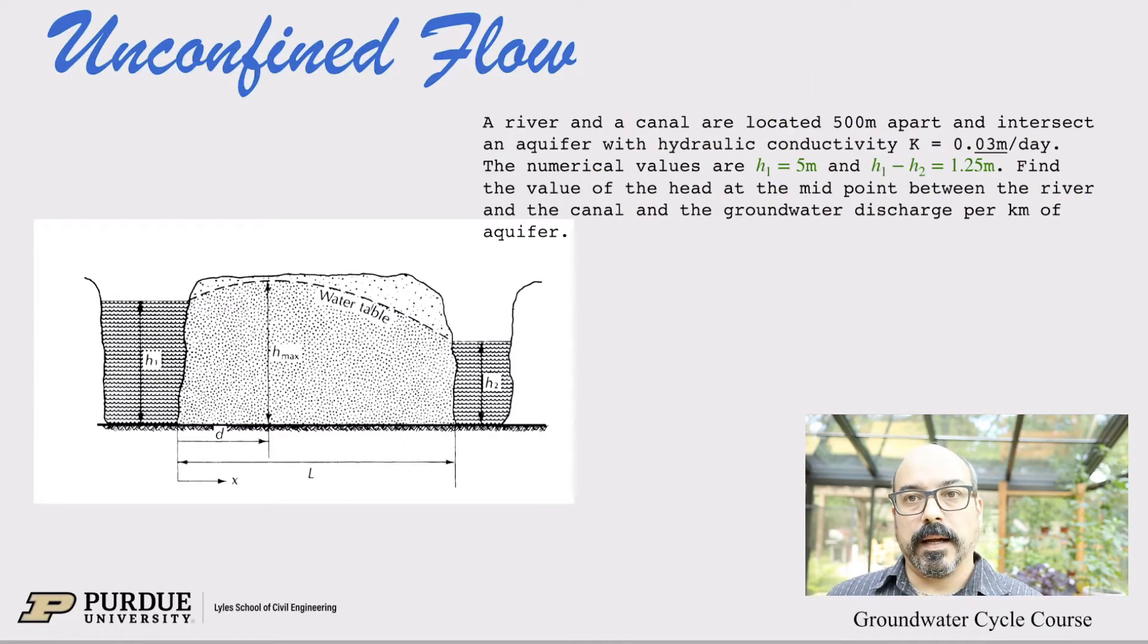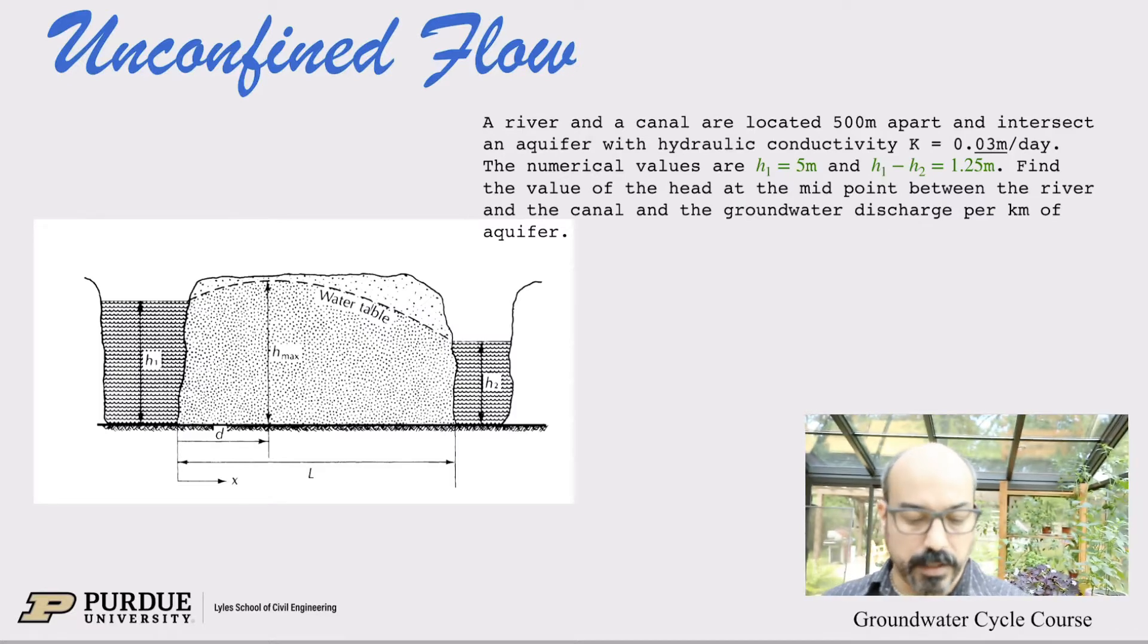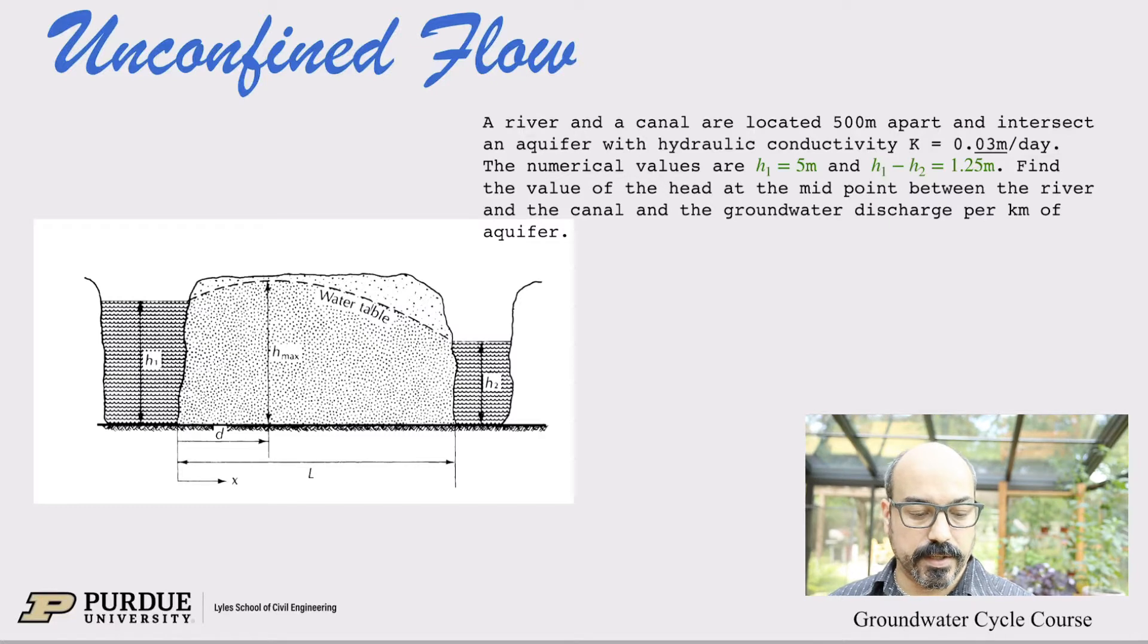Well, let's start with an example. So if I take a simple example, then maybe we can work through the example and sort of derive the equations with a more intuitive understanding of what those equations are telling us. Okay, so a river and a canal are located 500 meters apart and intersect an aquifer with hydraulic conductivity K, 0.03 meters per day.